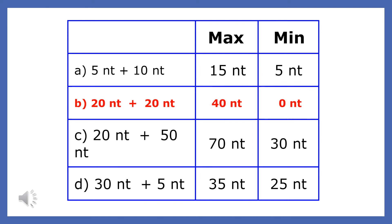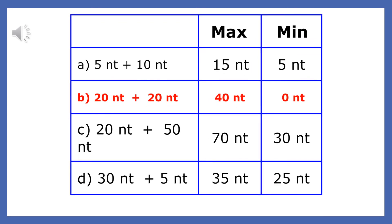So why is the answer choice B? The answer is clear when we find the range of possible resultants for all four choices. Remember, once we find the minimum and maximum resultants by adding and subtracting the forces given, every force in between these extremes is possible. Now look at the range of possible resultants for all the other choices — 20 does not fit within any of these ranges.